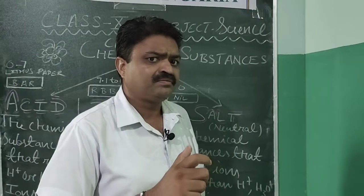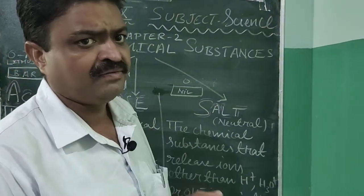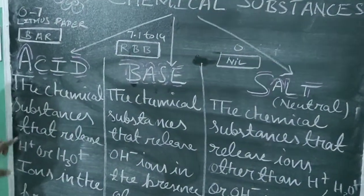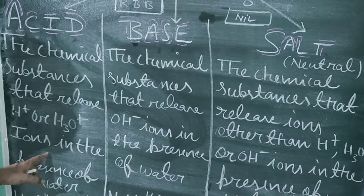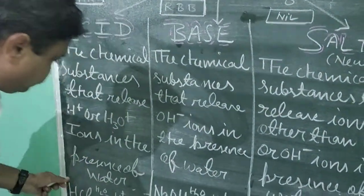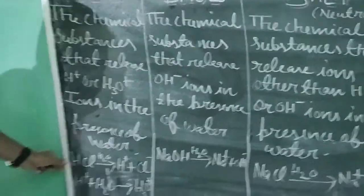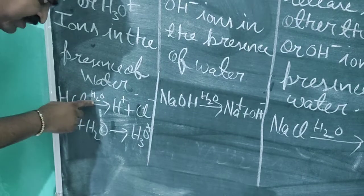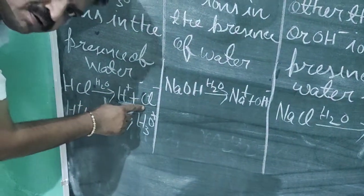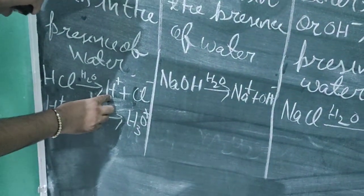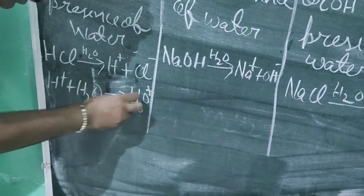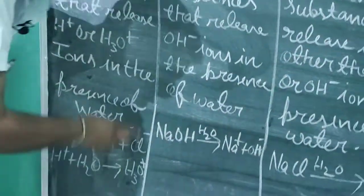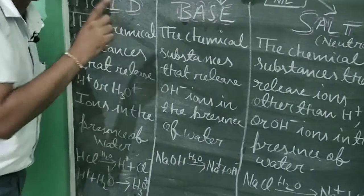The main characteristic by which we can identify an acid is this: chemical substances that release hydrogen or hydronium ions in the presence of water are known as acids. For example, HCl — when HCl reacts with water, it releases hydrogen ion and chlorine ion. When that hydrogen ion reacts with water, it releases hydronium ion. So hydrogen and hydronium ions are released by acids in the presence of water.